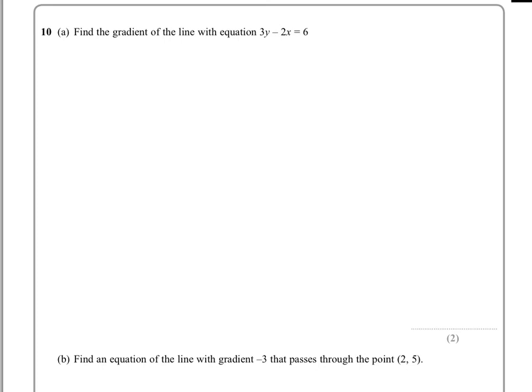In question 10, we're asked to find the gradient of the line with equation 3y minus 2x equals 6. In order to find the gradient of a line, we need to get that line into the form y equals mx plus c, c being the constant. The reason is, once we get it into this form, then the m value is in fact the gradient.